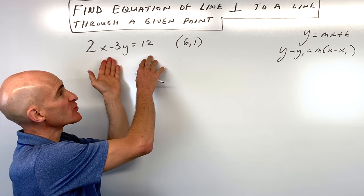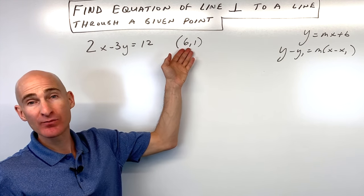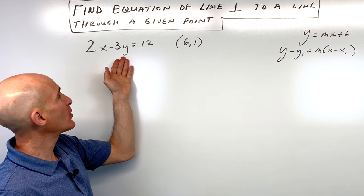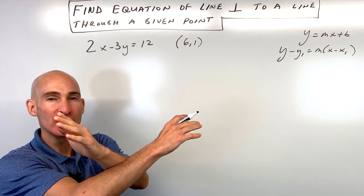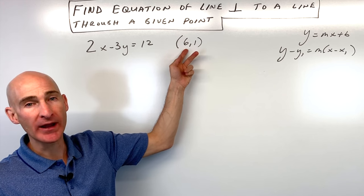We're given this line, 2x minus 3y equals 12, and this point (6, 1), and we want to find the equation of a line that's perpendicular to it and goes through this point.